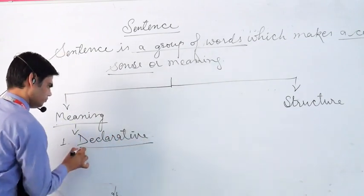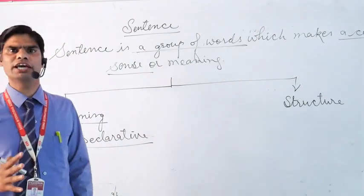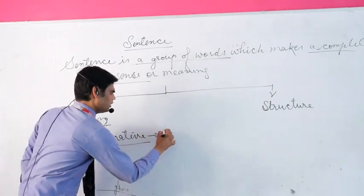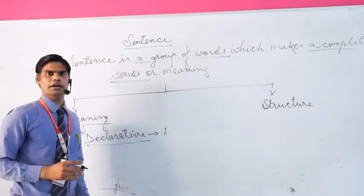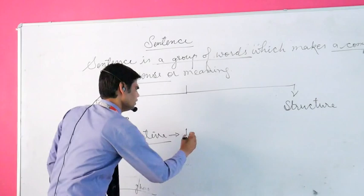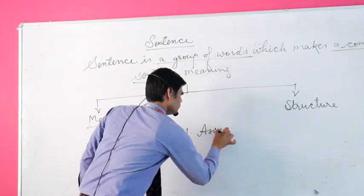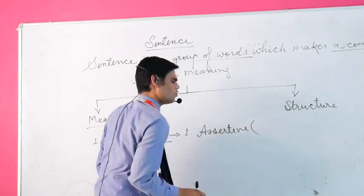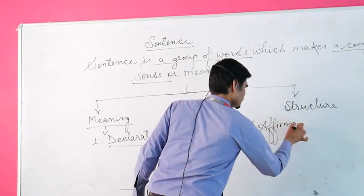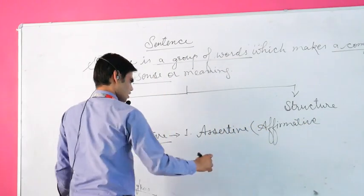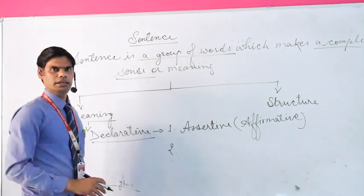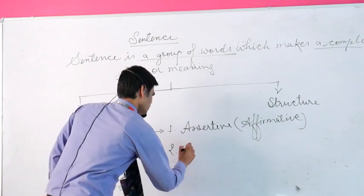The first type of meaning-based sentence is declarative. There are two types of declarative sentences. The first one is the affirmative declarative sentence — a declarative sentence which has an assertive, certain opinion. It is also known as affirmative.